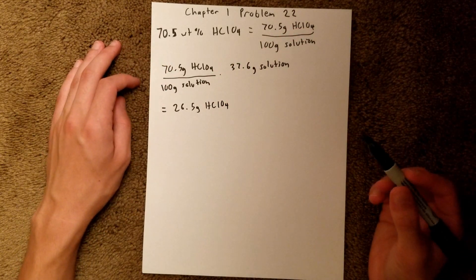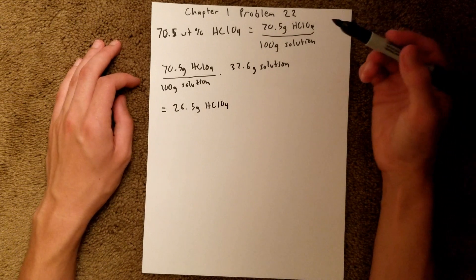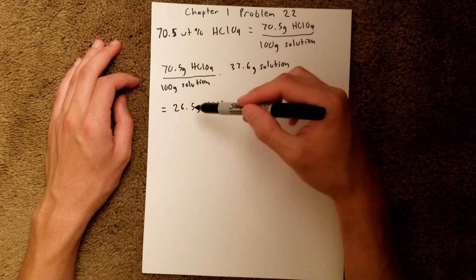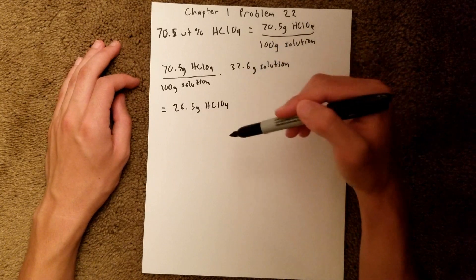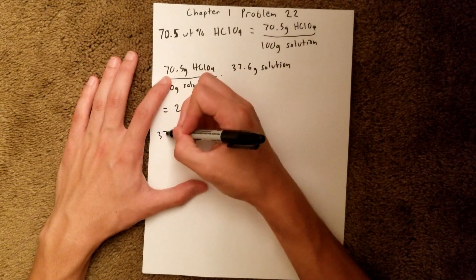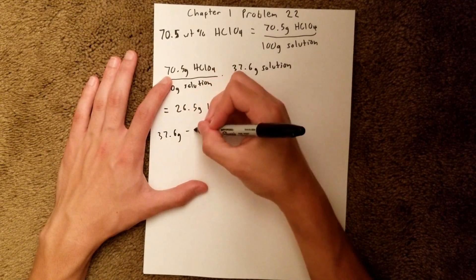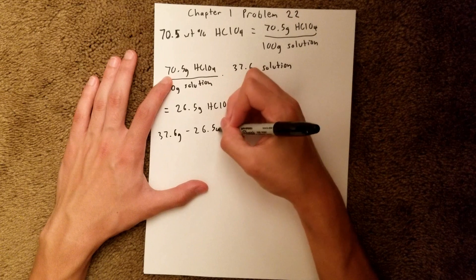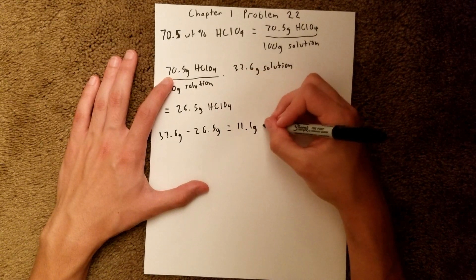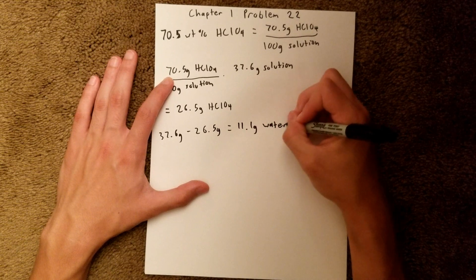And if we have a total mass of the solution of 37.6 grams, and we know 26.5 grams is HClO4, if we subtract those two values, that will give us the mass of water in the solution. So we can say 37.6 grams minus 26.5 grams is equal to 11.1 grams, and that is going to be grams of water in the solution.